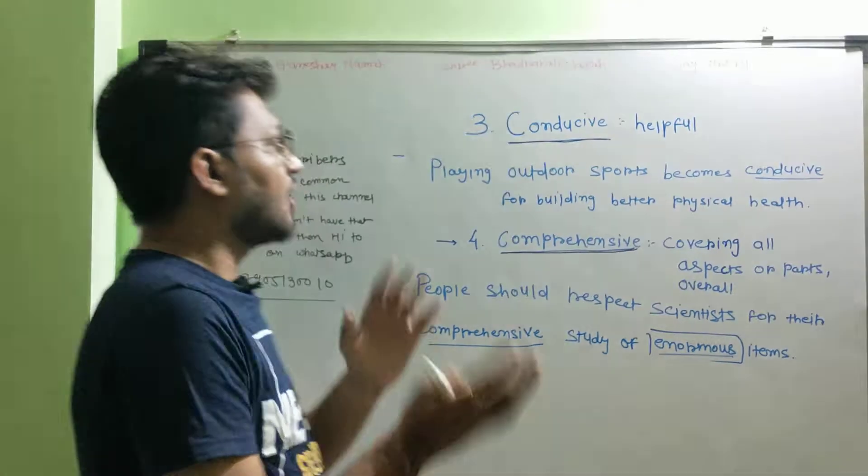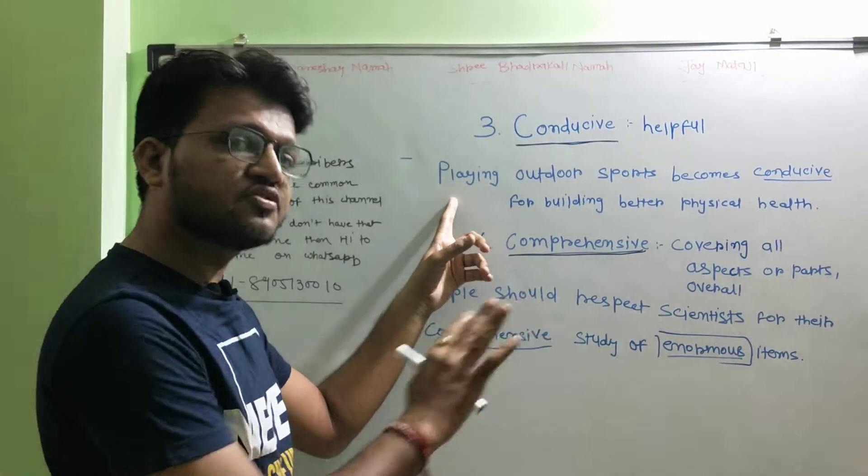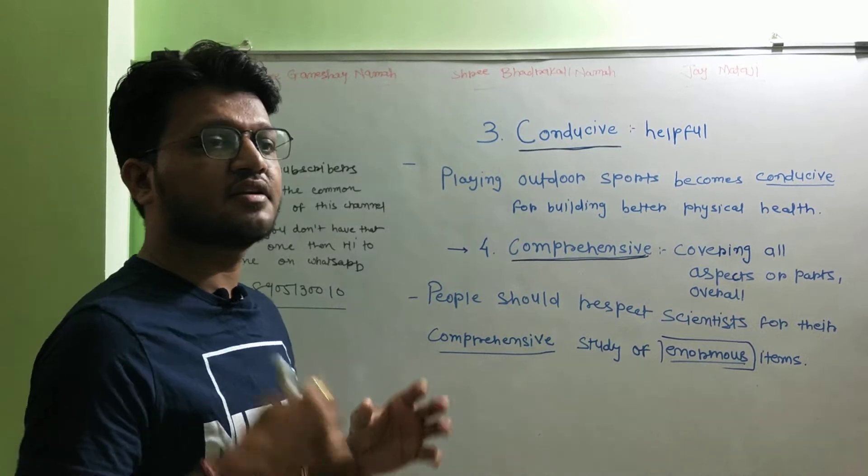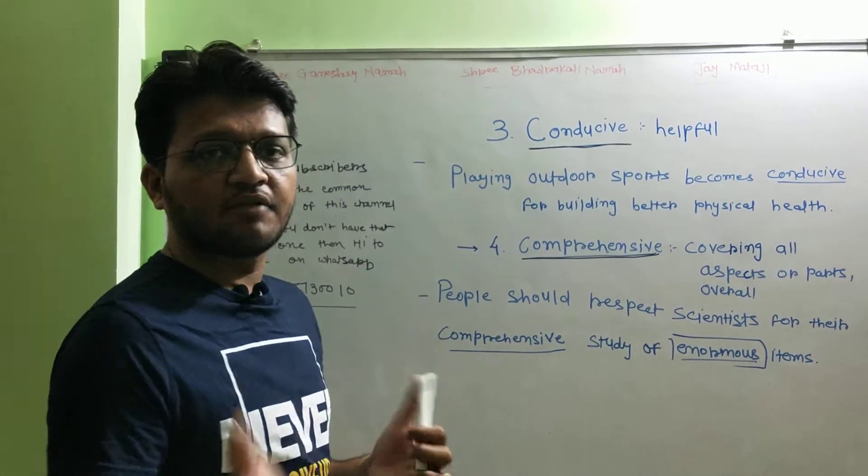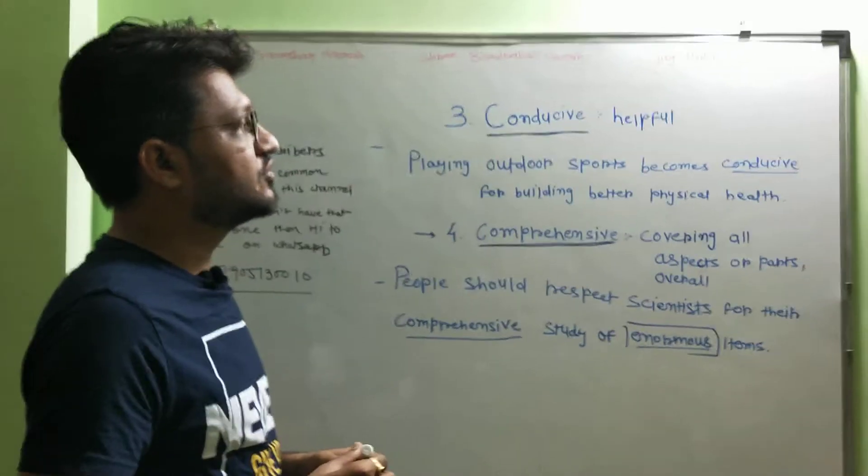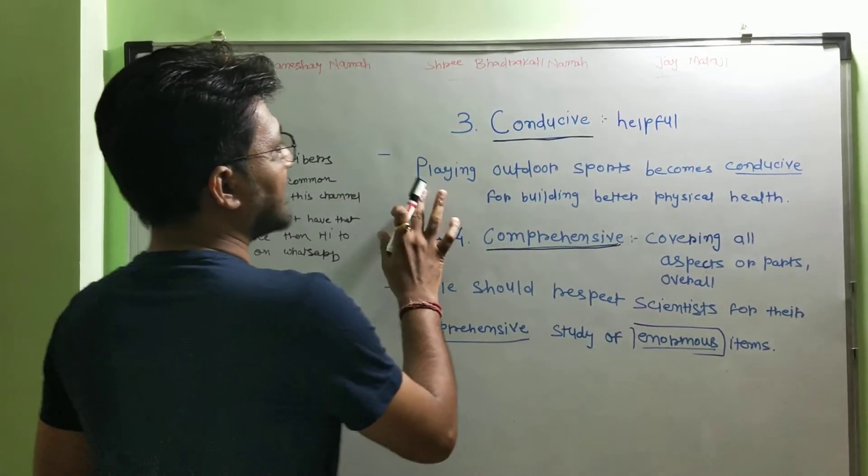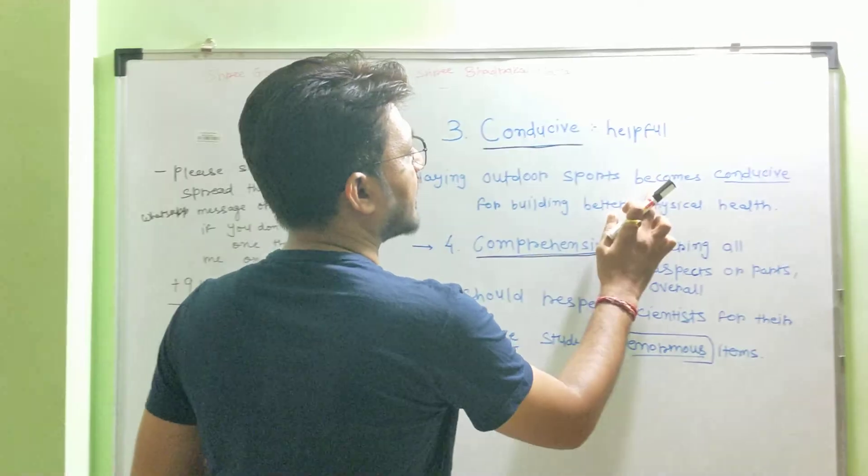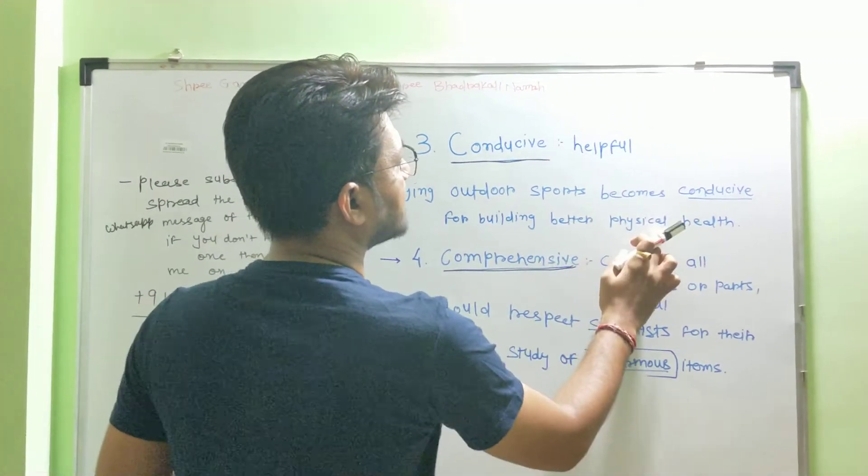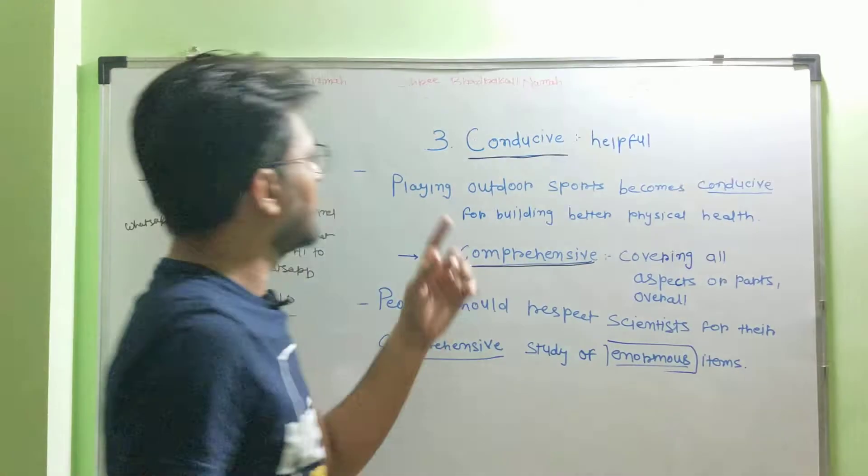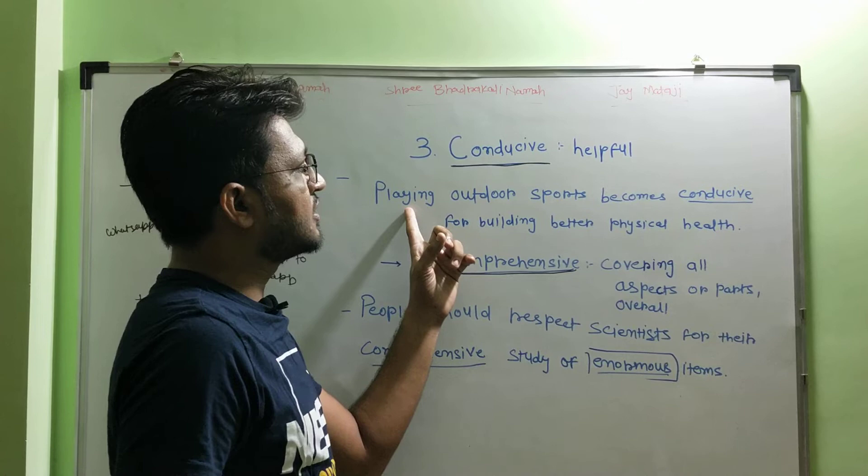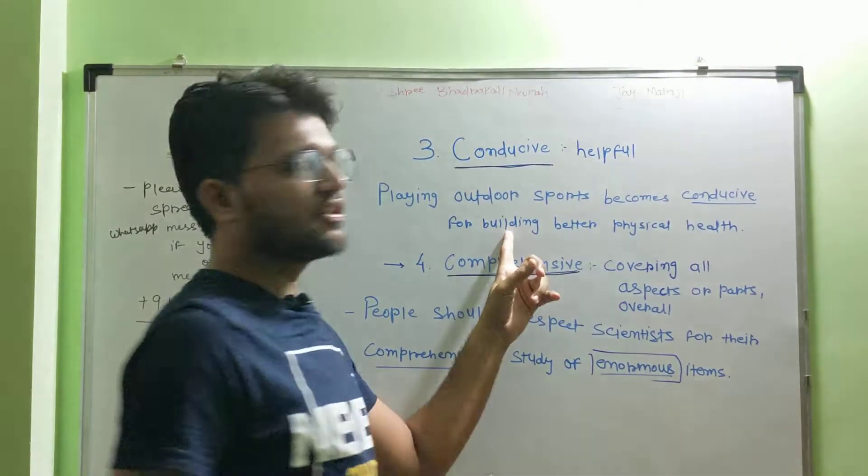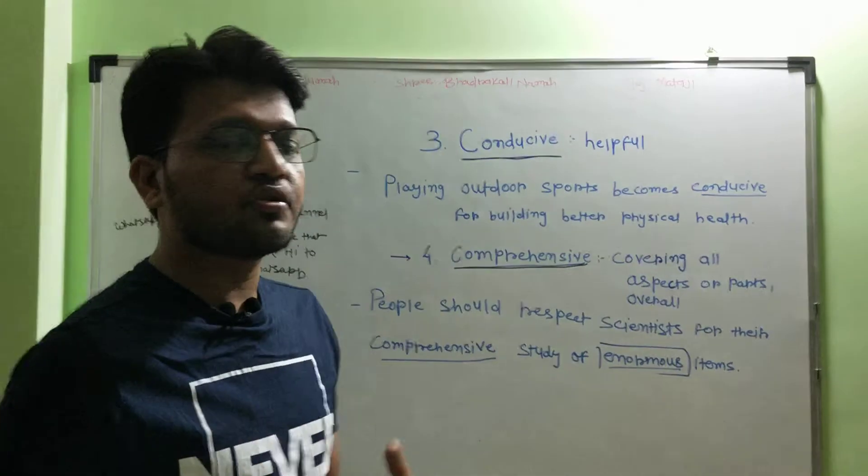Now let's discuss the usage of that word in one particular sentence which can be utilized either in your IELTS writing or speaking, and for normal users you can use this word in your day-to-day communication. The sentence is: playing outdoor sports becomes conducive for building better physical health. It means outdoor sports khelna helpful hota hai, yani ki conducive hota hai for achha physical health banane ke liye.